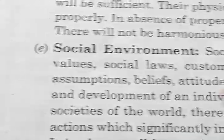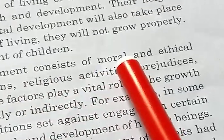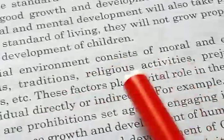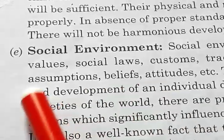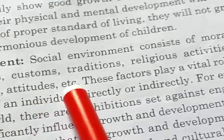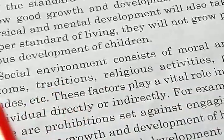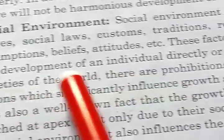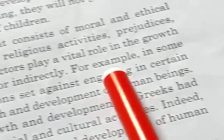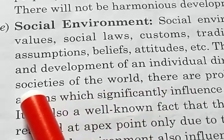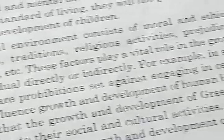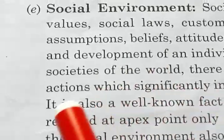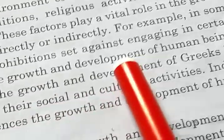Social environment consists of moral and ethical values, social laws, customs — meaning different types of rules and regulations — traditions, religious activities, prejudice, assumptions, beliefs, attitudes, and so on. These factors play a vital role in the growth and development of an individual directly or indirectly. In some societies of the world, there are prohibitions set against engaging in certain actions which significantly influence the growth and development of human beings.